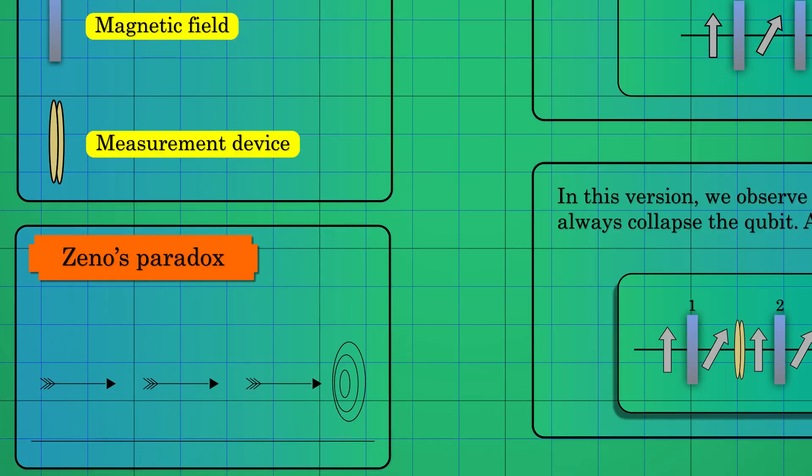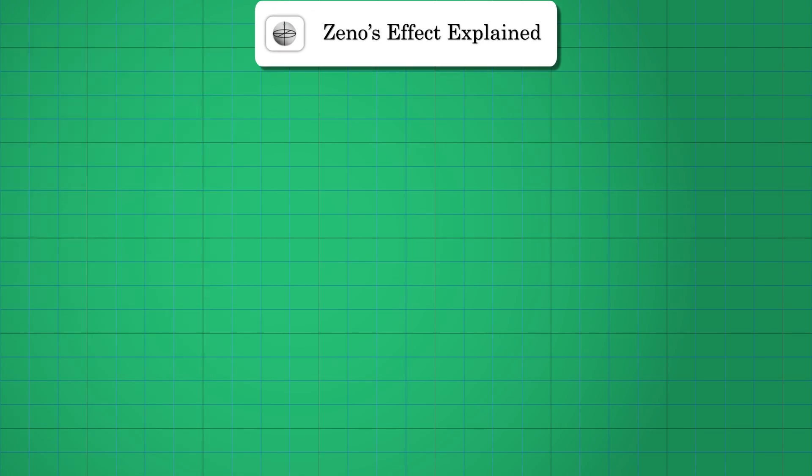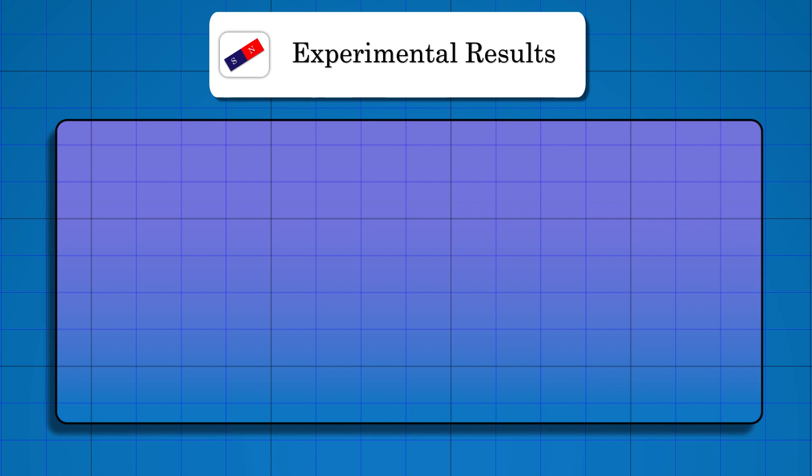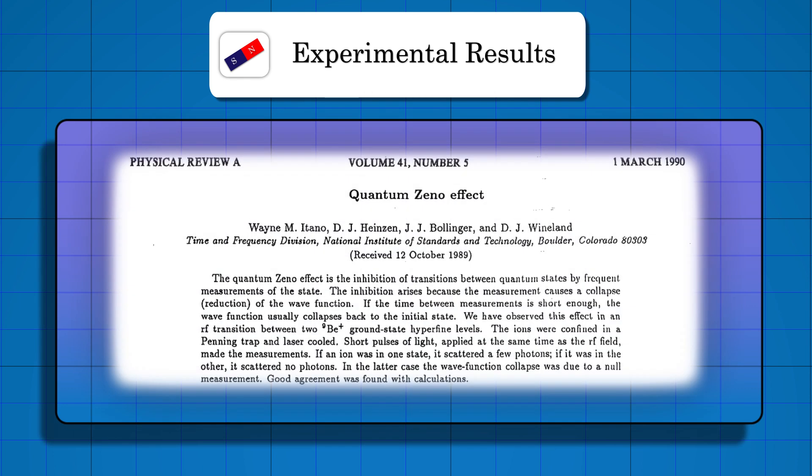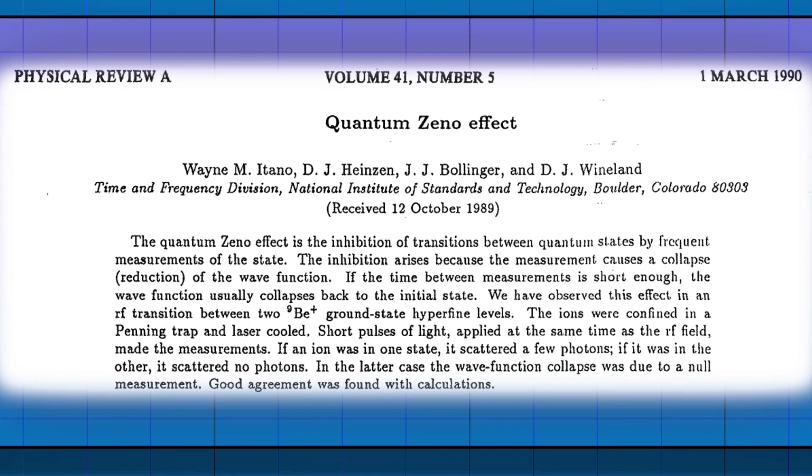This is all a good theoretical prediction, but is there any experimental verification? After all, that is the hallmark of science. In a series of experimental works, the Quantum Zeno Effect was tested and it was demonstrated to behave as predicted.